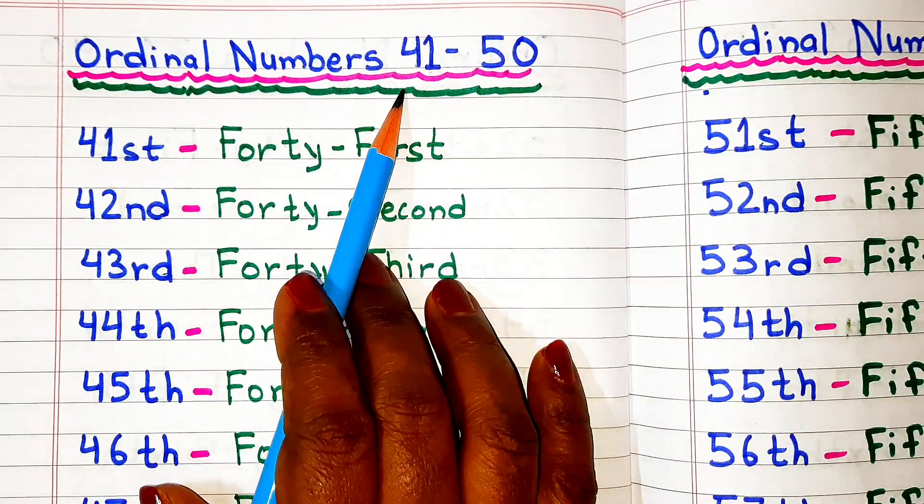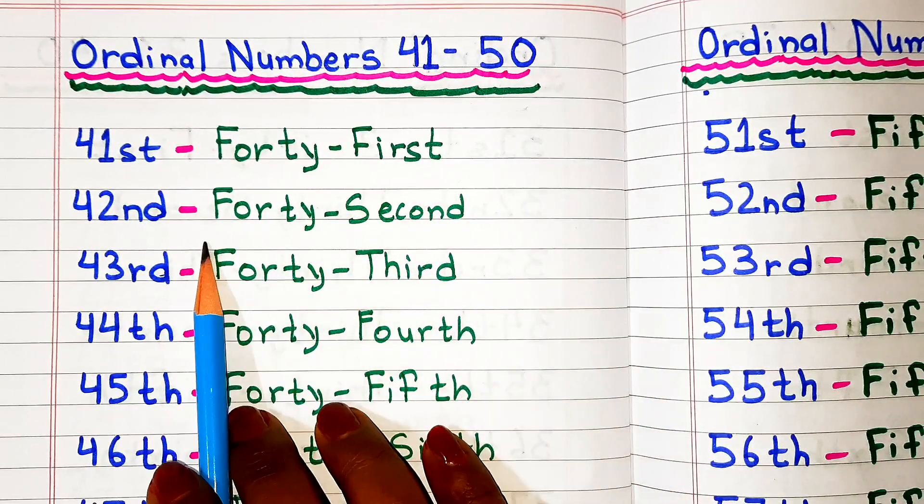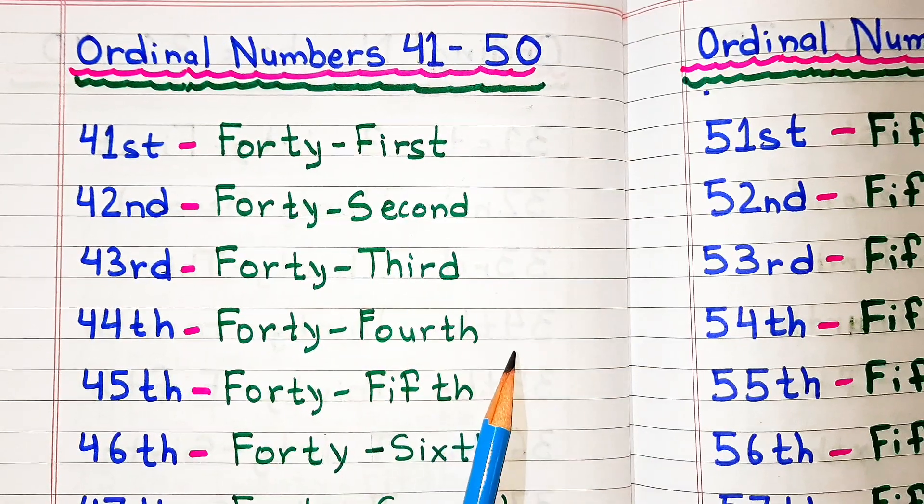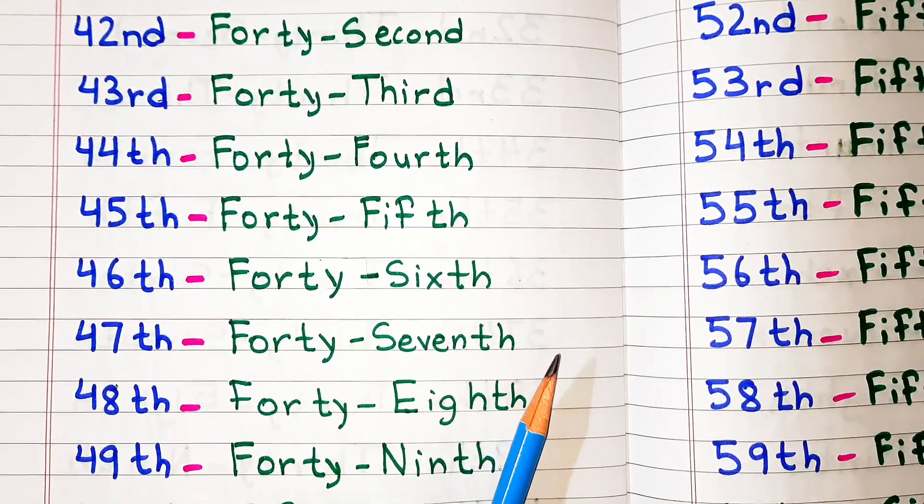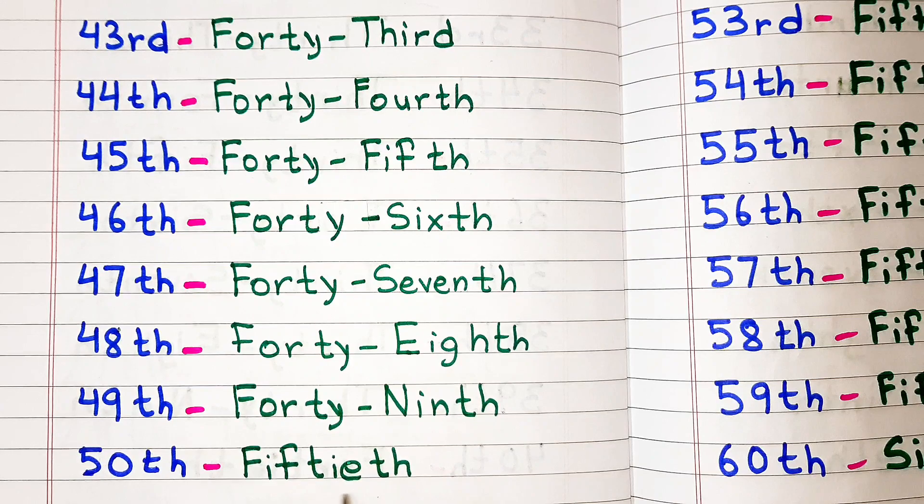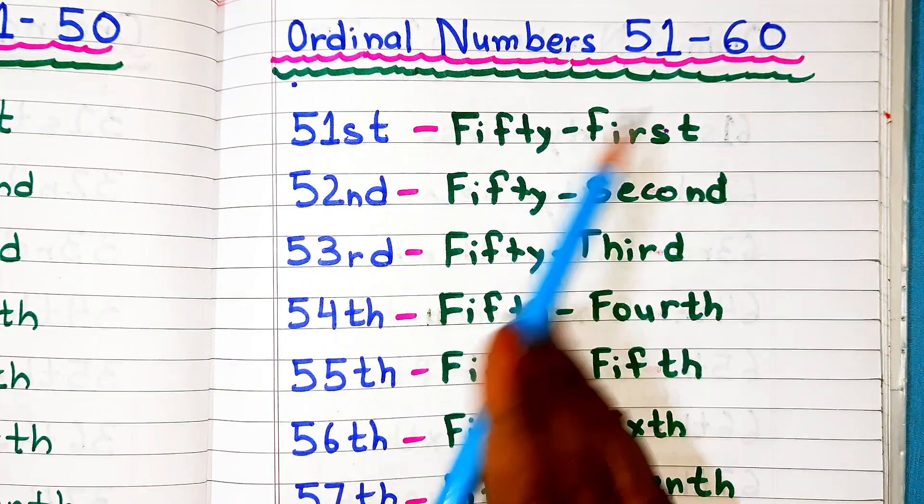Ordinal numbers 41 to 50: 41st, 42nd, 43rd, 44th, 45th, 46th, 47th, 48th, 49th, 50th.